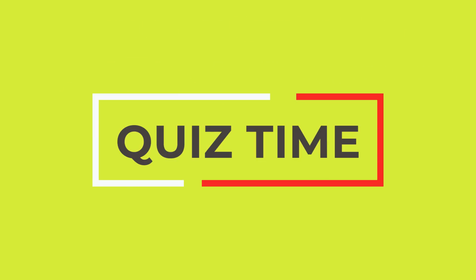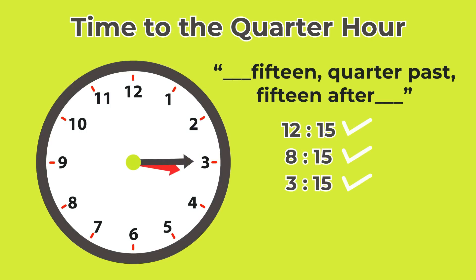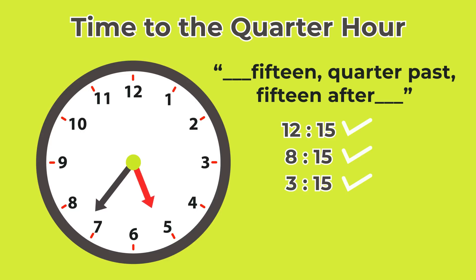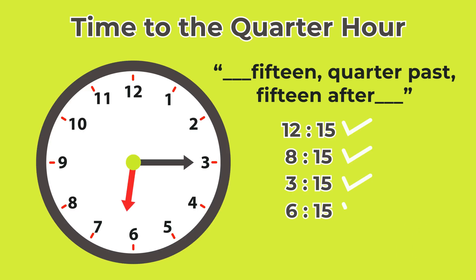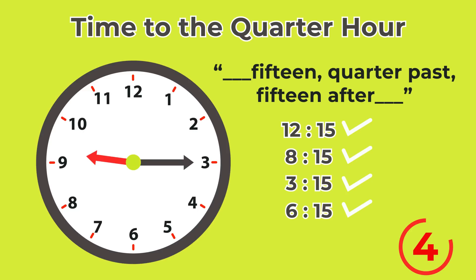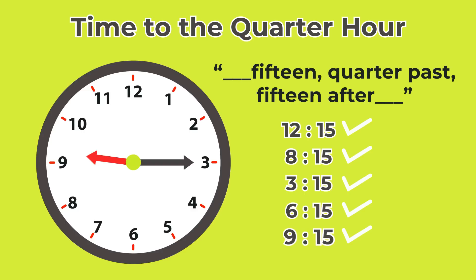Let's try a couple more. About this one — what will this be? The hour hand is a bit past the six and the minute hand is on the fifteen. So in this case, this would be quarter past six, or six fifteen. Number two: if the hour hand is a bit past the nine and the minute hand is on the fifteen, this will be quarter past nine, or nine fifteen.